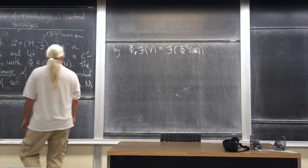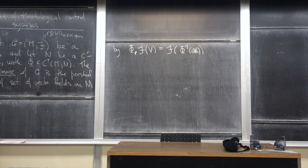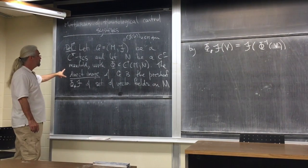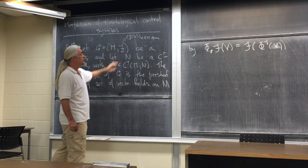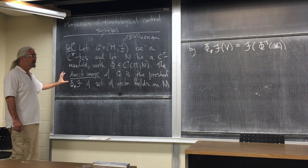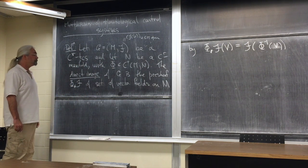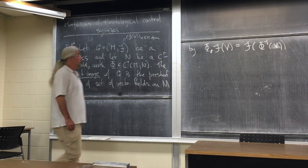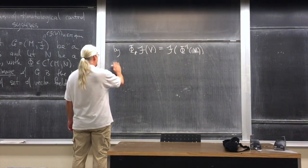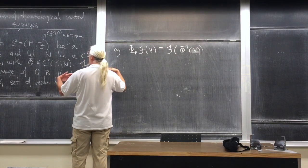This is a natural sheafy kind of construction. For example, you can show that if F is a sheaf, then the direct image phi-star F will also be a sheaf — a sheaf of sets. With this construction we can define what I mean by a morphism of tautological control systems.